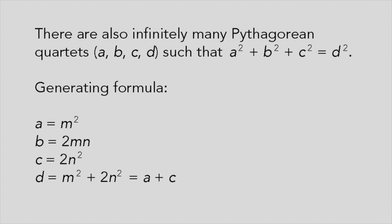A formula that generates Pythagorean quartets is A equals M squared, B equals 2MN, C equals 2N squared, and D equals M squared plus 2N squared, which equals A plus C. Also notice that B squared equals 2AC.